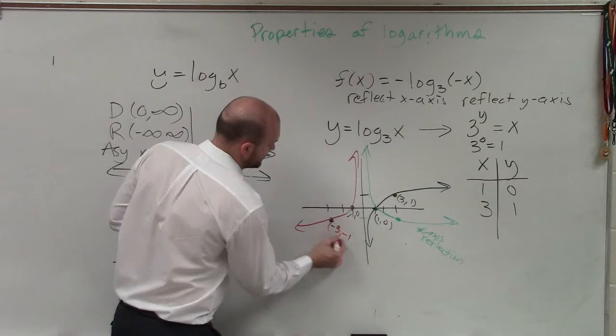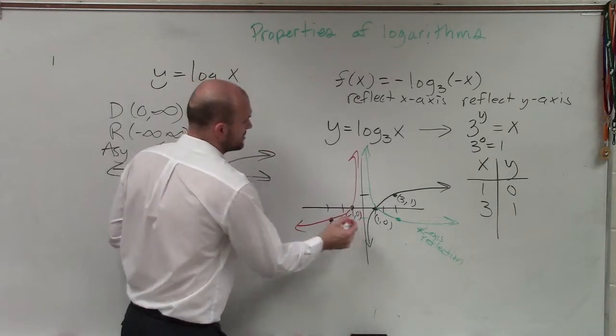So your final graph is going to look something like that, with this being negative 3 comma negative 1, and this being negative 1 comma 0.